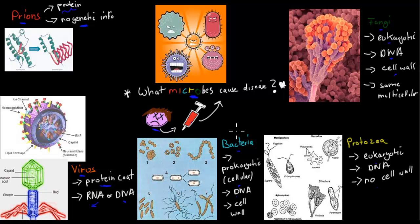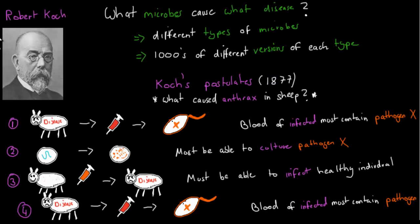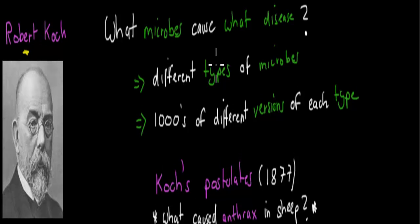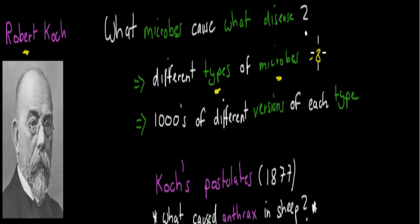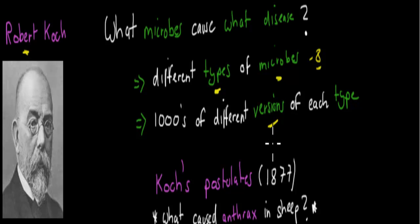Now that we established there are so many different types of microbes that can cause disease, the next question was: what kind of microbe causes what kind of disease? That's where Robert Koch came in. The problem is there are many different types of microbes, and each type also has different versions — for example, the HIV virus, the cold virus, the flu virus — and each of these causes a different type of disease. We had no way to figure out which exact pathogen causes which disease.